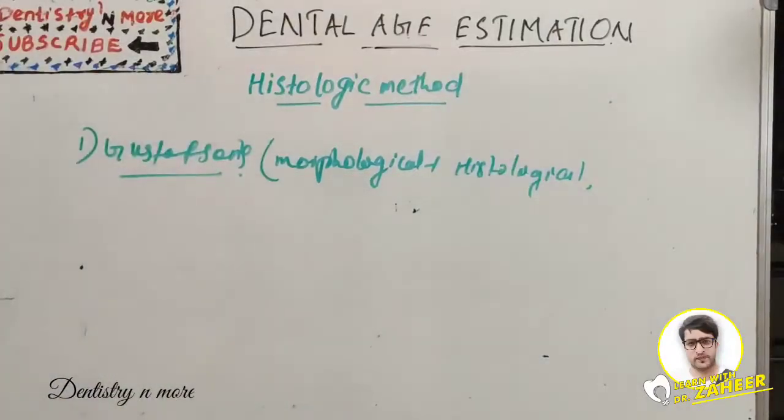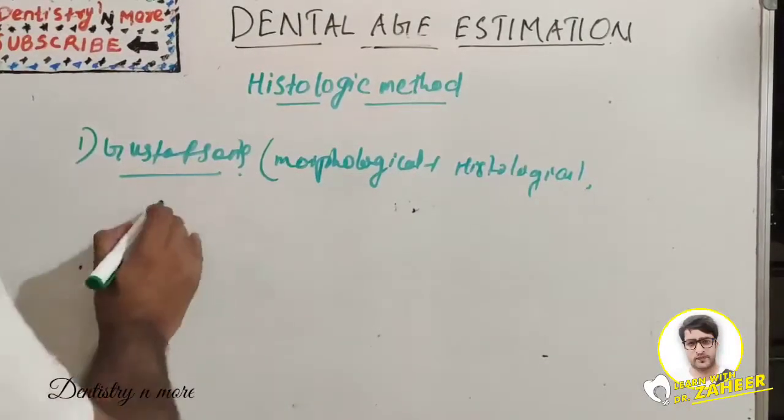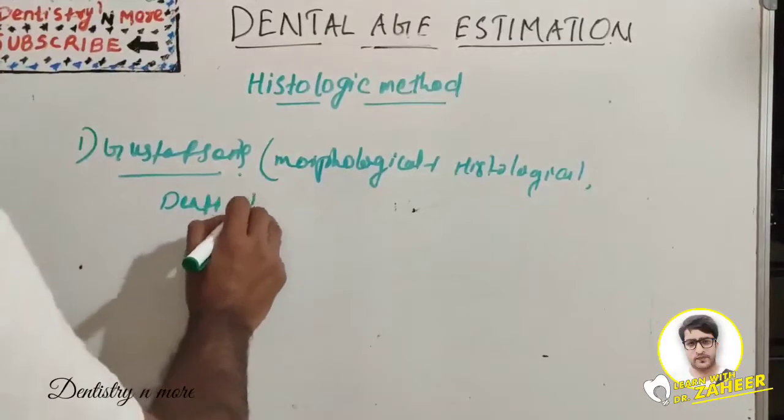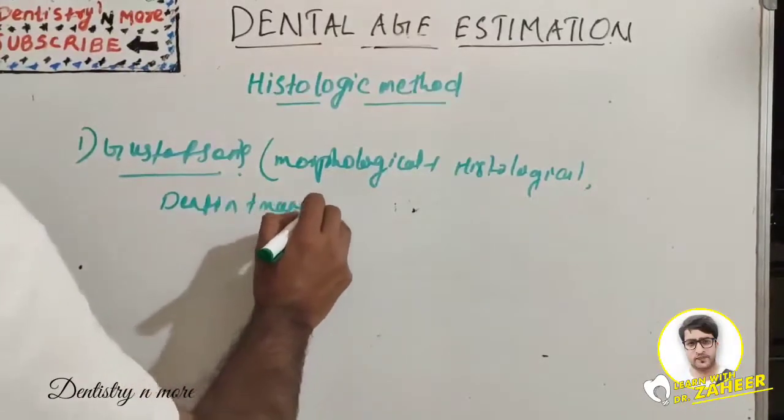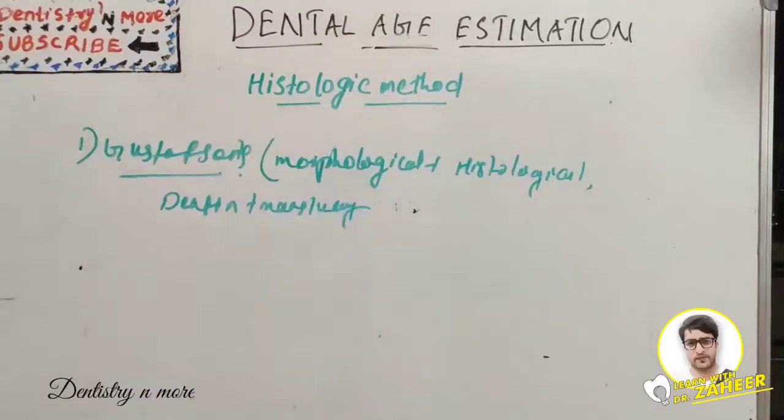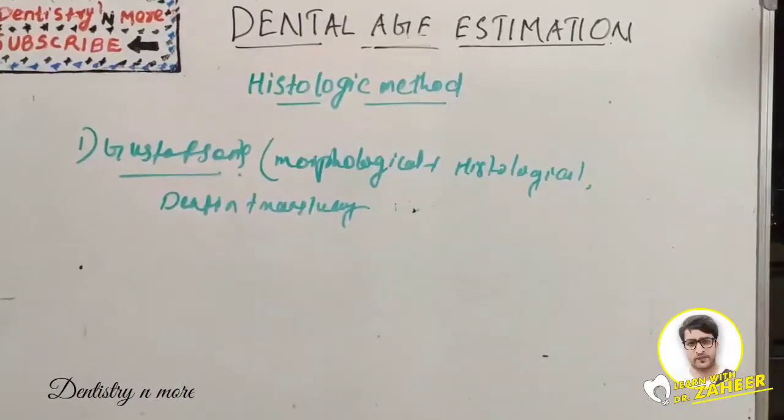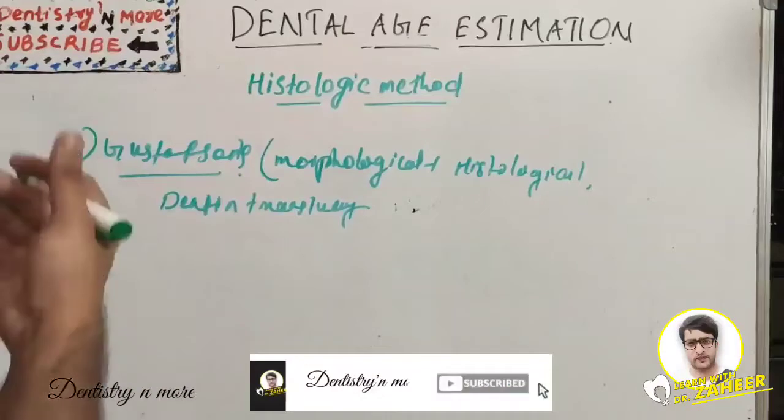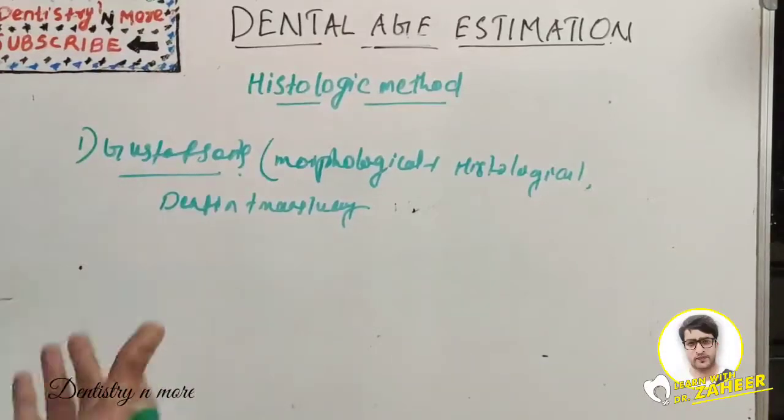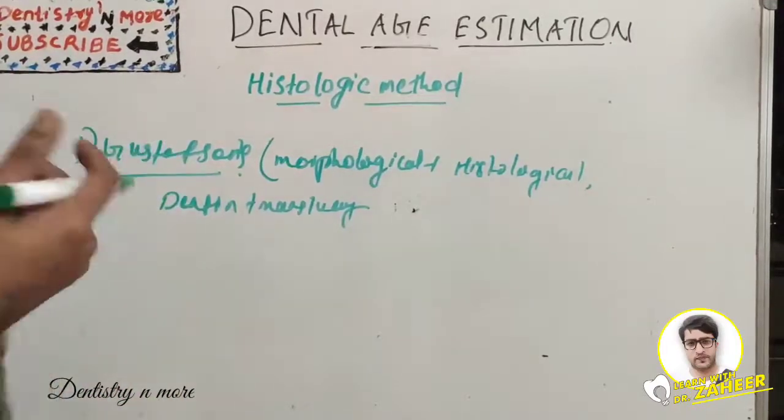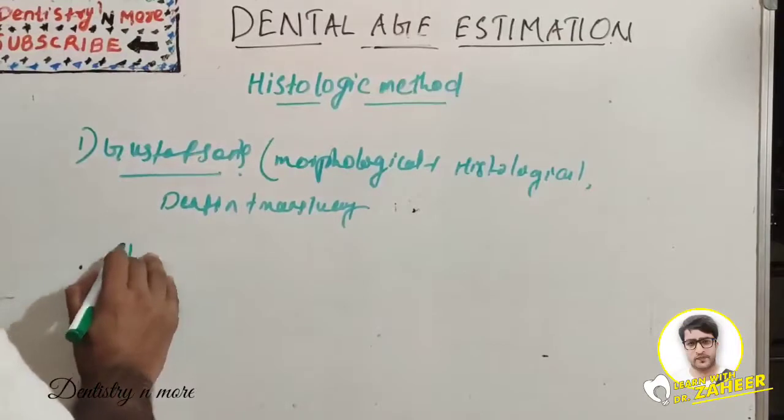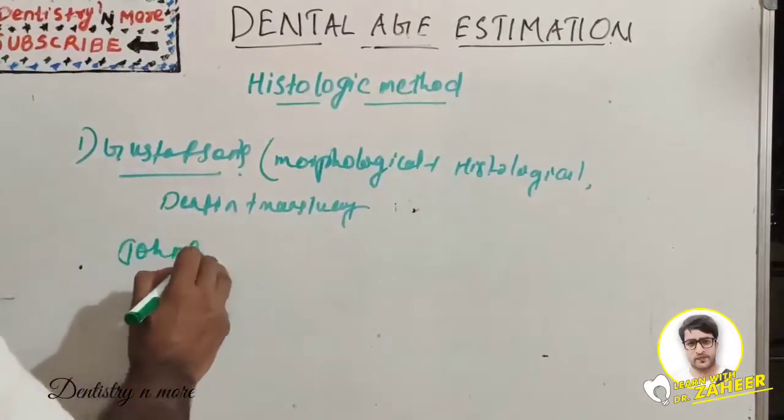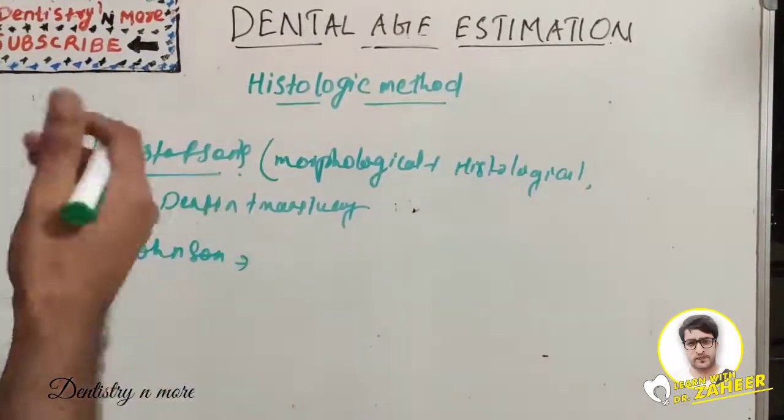Dentine translucency we can use. Root dentine becomes translucent in the third decade of life. It begins at the apex and advances coronally. It decreases the diameter of dentinal tubules, increases intratubular calcification, and thereby increases translucency. Johnson recognized it as best for age estimation.